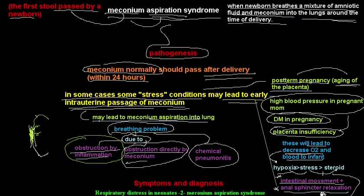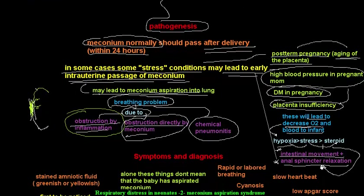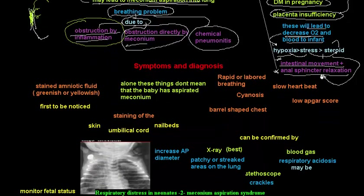To summarize the pathogenesis: placental insufficiency leads to decreased O2 and blood to the infant, causing hypoxia, stress, and steroid release. Steroid release causes intestinal movement and anal sphincter relaxation, leading to early meconium release, followed by breathing problems from airway inflammation, direct obstruction by meconium, or chemical pneumonitis.